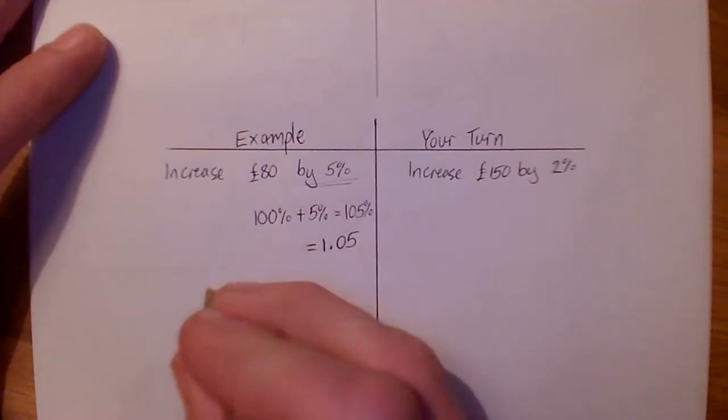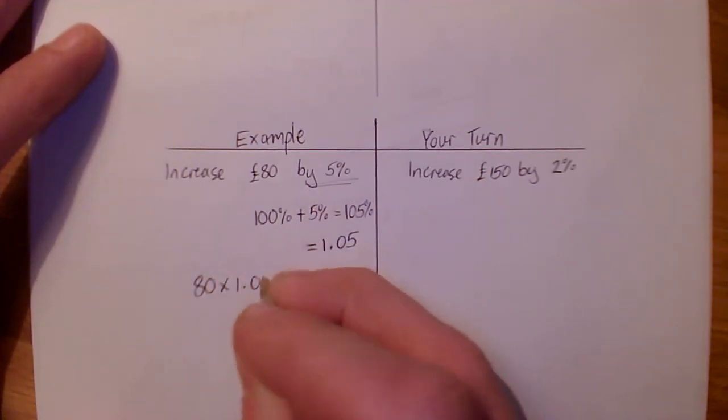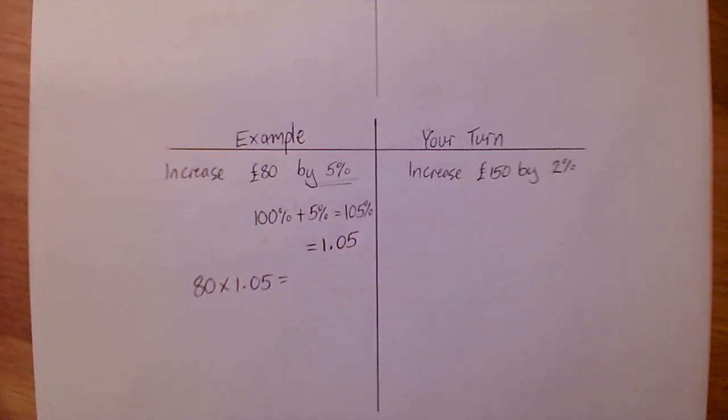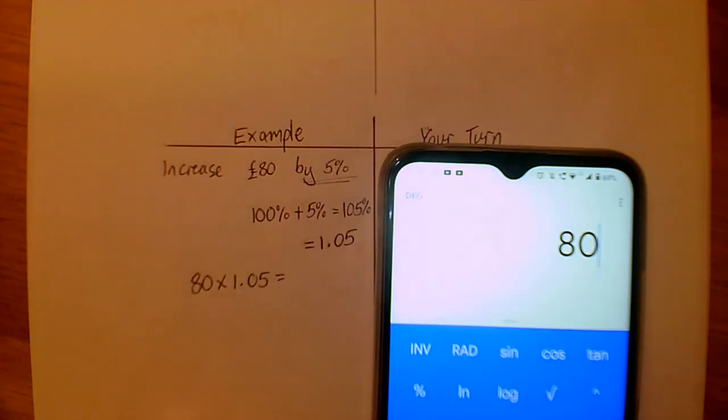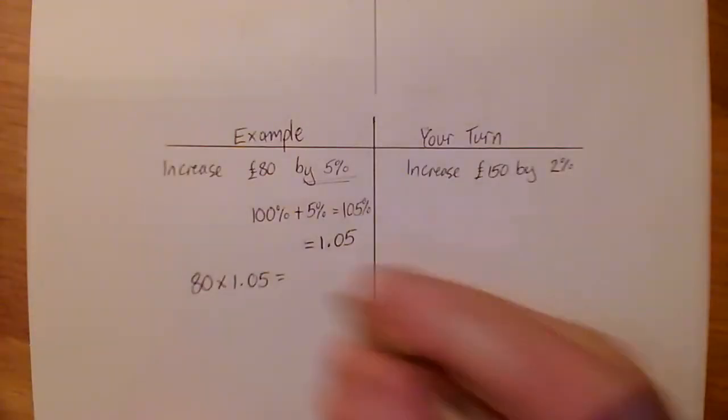Once we've got that, everything else is the same. So we're doing 80 times 1.05, and bring the calculator in for that. We've got 80 times 1.05, which is 84 pounds.